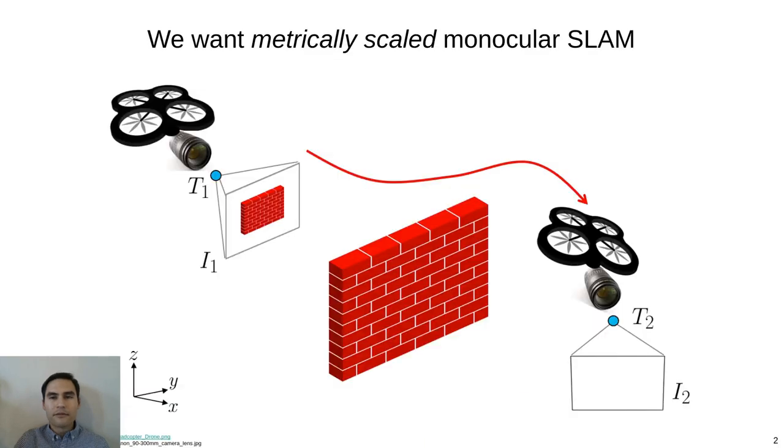Our motivating problem is that of monocular SLAM, or simultaneous localization and mapping, where the pose of a single monocular camera is estimated as it moves through the environment. Many applications that could benefit from monocular SLAM, such as mobile robot navigation or augmented reality, require these SLAM solutions to be metrically scaled to be of any use.